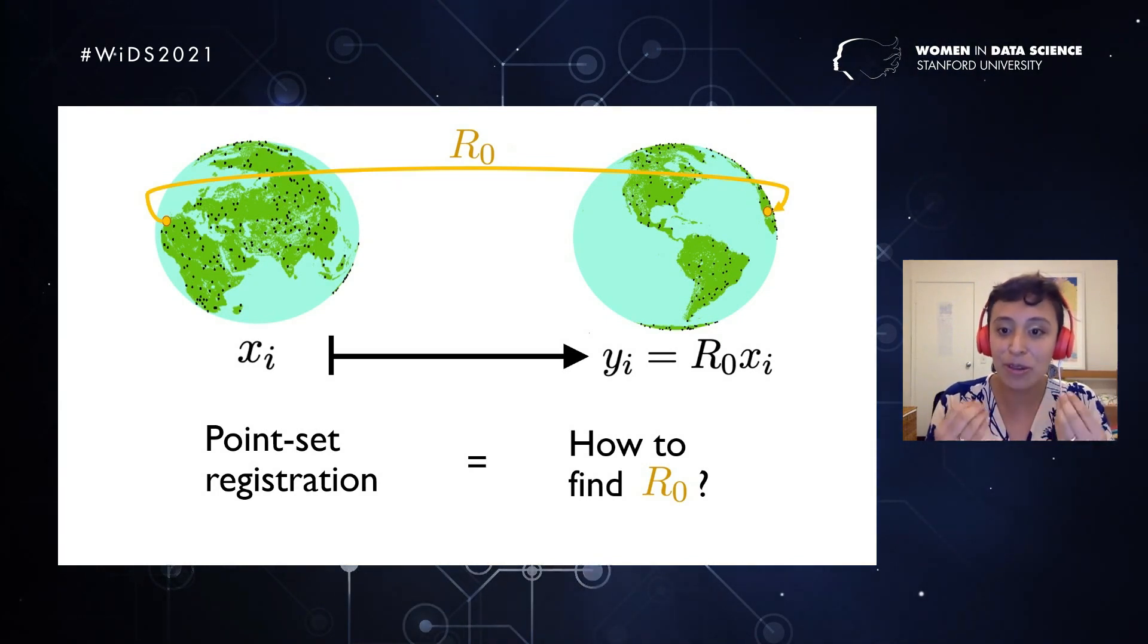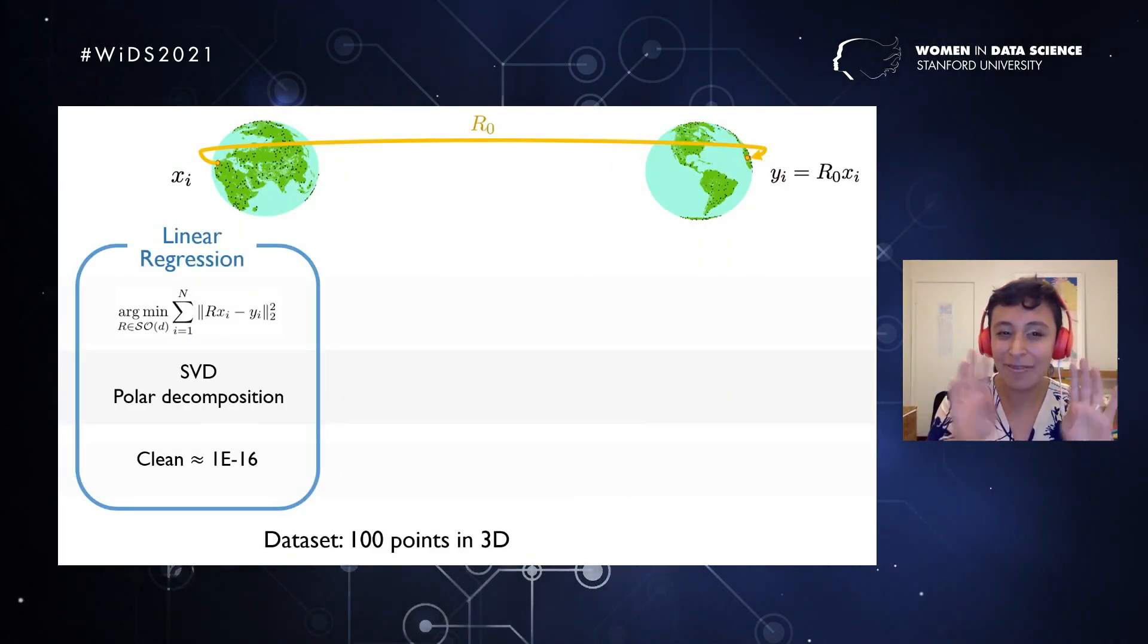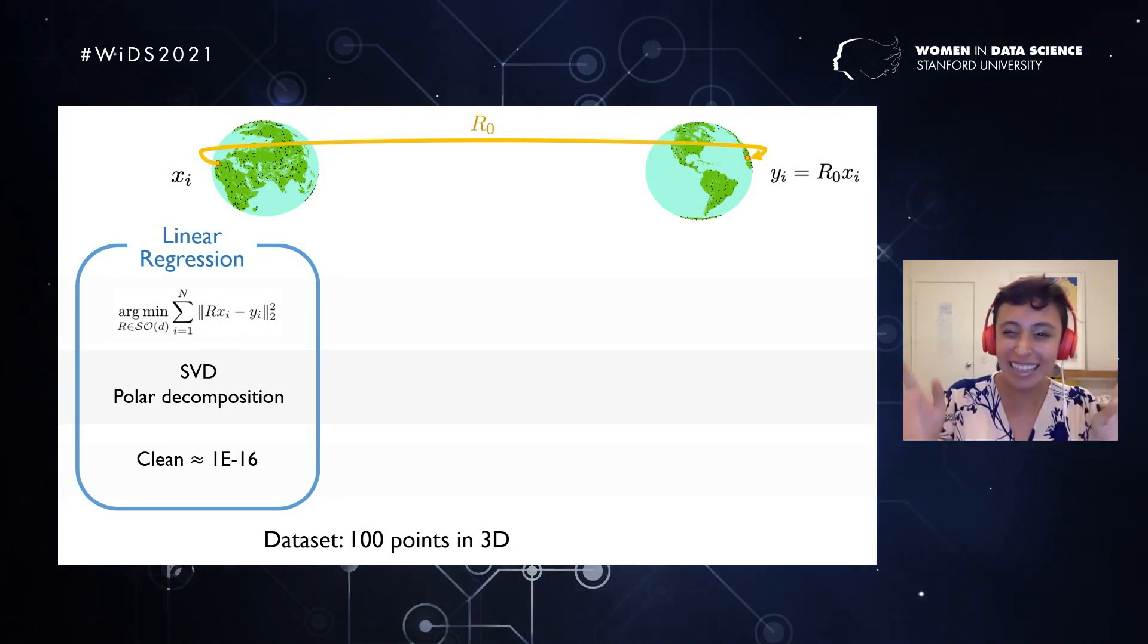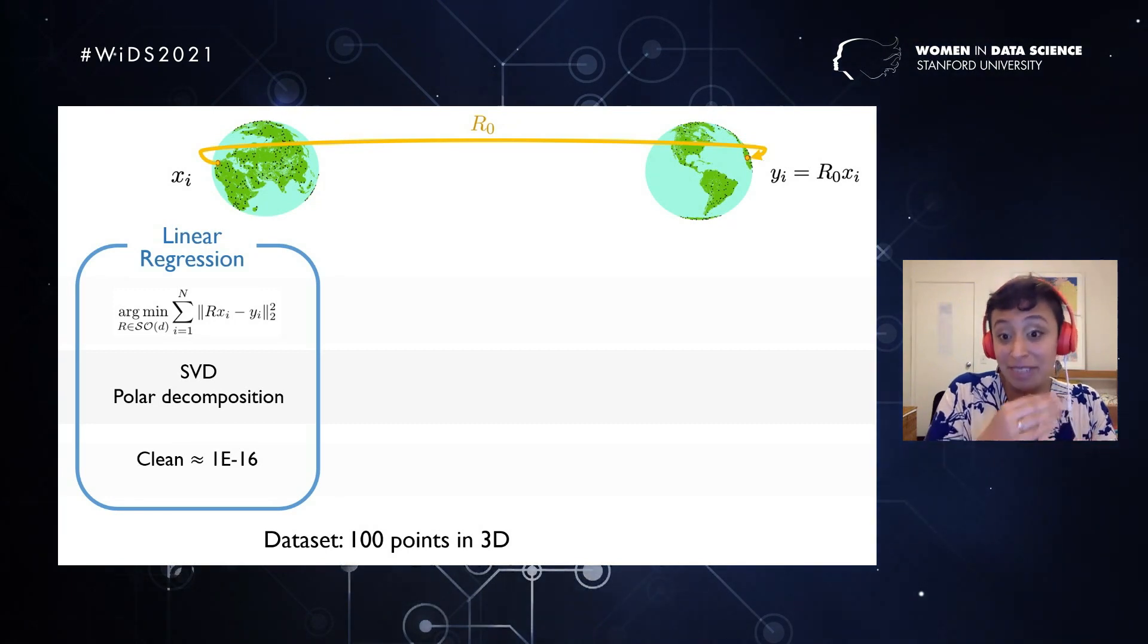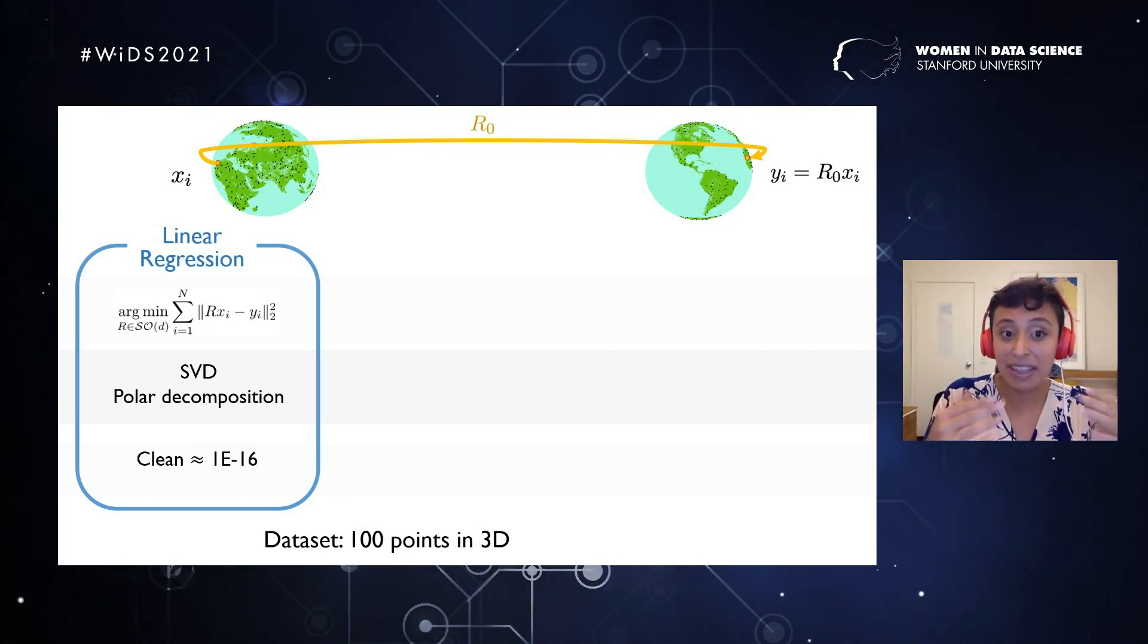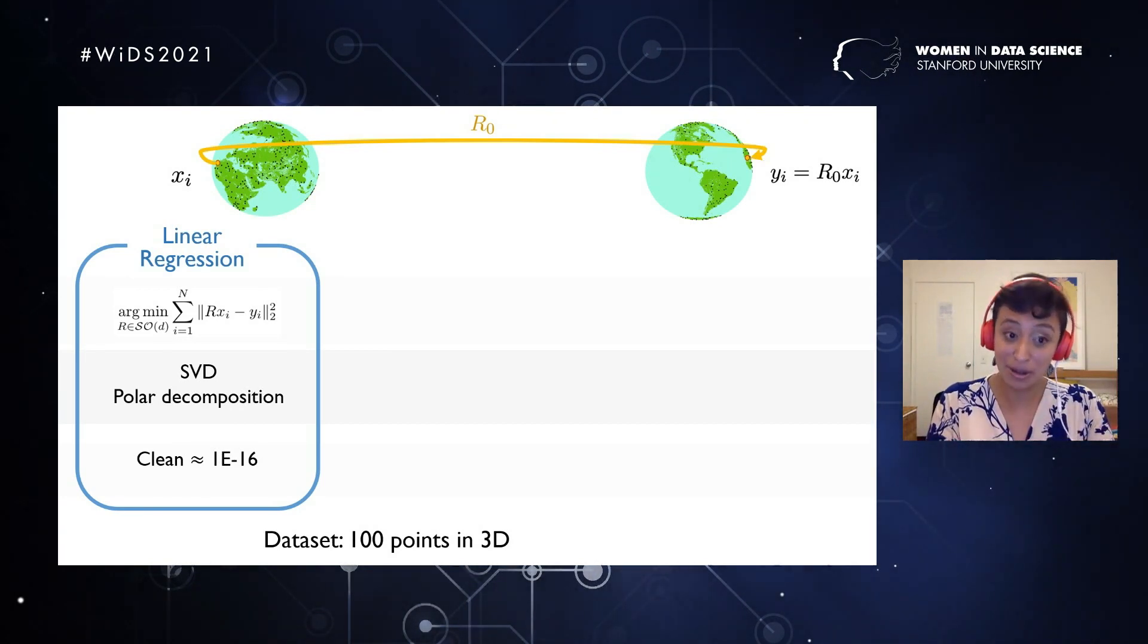That is what we call a point set registration problem. The idea is, how do we find that rotation? So right now it should ring a bell in your minds, and you say, oh, finding a linear transformation, that sounds like linear regression. And actually it is. If we use least squares but we restrict ourselves to find a rotation instead of just any linear mapping, then we are solving the problem of point set registration.